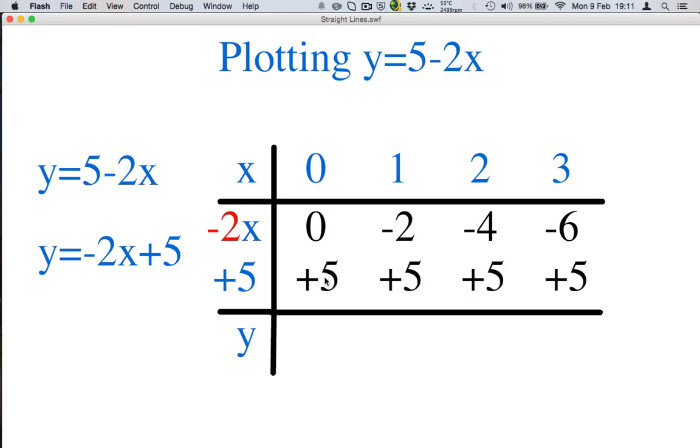So this says 0 plus 5, minus 2 plus 5, minus 4 plus 5, minus 6 plus 5. Basically, just do the sum that's between the two black lines. If this was a minus, it would say 0 minus 5 and we would write minus 5 at the bottom.